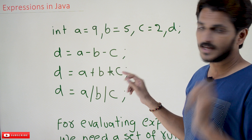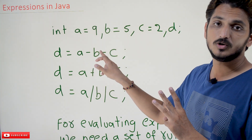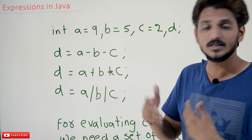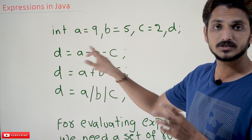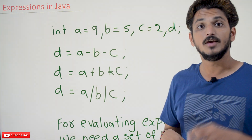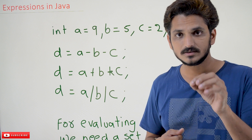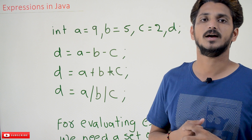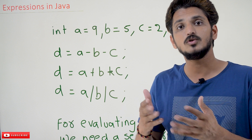Consider 9 - 5 - 2. If you evaluate it one way — first b - c means 5 - 2 = 3, then 9 - 3 = 6 — so 6 is stored in d. If you evaluate the other way — 9 - 5 first = 4, then 4 - 2 = 2 — so 2 is assigned to d. Evaluating the same expression in two different ways gives two different answers. That is why we need to understand the conditions and rules it follows, otherwise different evaluations give different outputs.